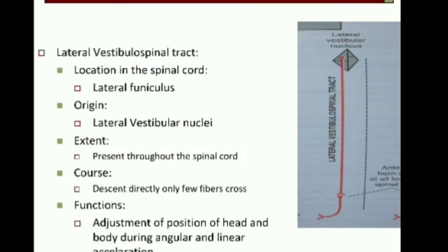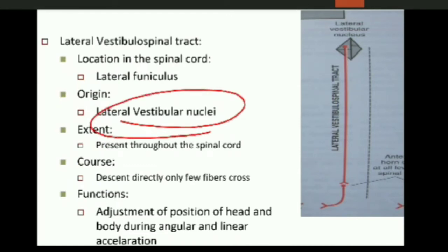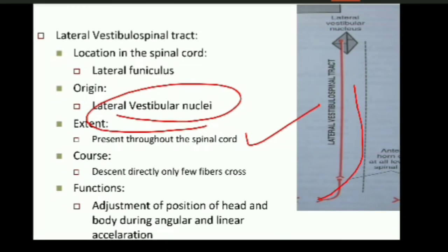The lateral vestibulospinal tract: the fibers of this tract originate from the lateral vestibular nucleus, also known as the Deiters nucleus. The fibers of this tract are present throughout the spinal cord. From the Deiters nucleus, most of the fibers descend directly through the lateral white column, and very few fibers cross to the opposite side.